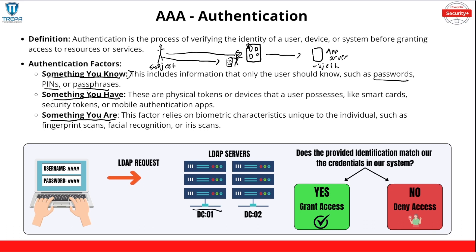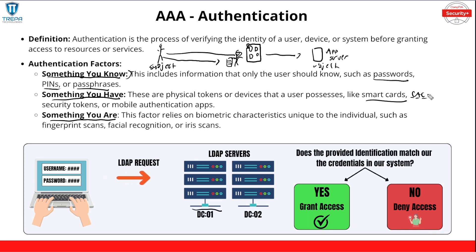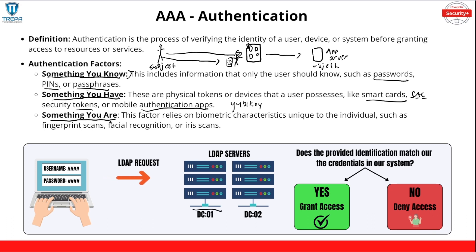If we want additional authentication factors — which we always should, especially as we build toward zero trust architecture — we add a second factor. Something you have: physical tokens or devices a user possesses, like a smart card. From my government background we used CACs — Common Access Cards — plugged into a CAC reader with a PIN, giving us two-factor. This could also be RSA tokens, a YubiKey, or a mobile authentication app like Google Authenticator on your phone.